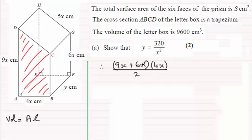Okay, that's the trapezium formula: sum of the parallel sides times the distance apart all divided by 2. Then we have to multiply that by the length back to get the volume, so that length back is y and that volume is going to be 9600. So there's our equation, all we need to do now is just tidy it up.